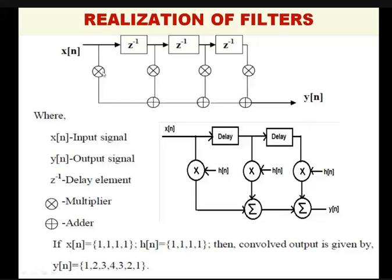When you take the second sample — the second one — the first one shifts here and the second one comes here. So this 1×1=1, and this 1 with h[n]=1 gives 1×1=1. So 1+1=2, the other two are 0, so y[n]=2. The third sample comes: 1, 1, 1 — so 1+1+1=3 will be the output. Hence everything works out step by step.